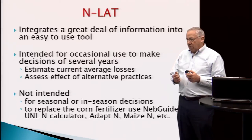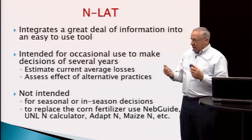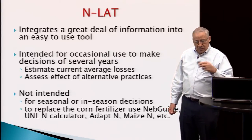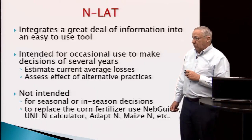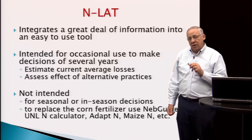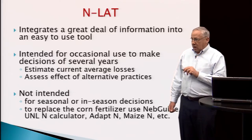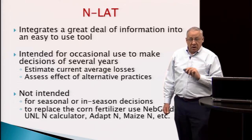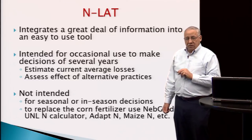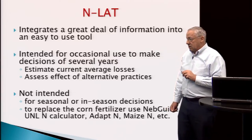NLAT is a decision tool and, as with many decision tools, it's constructed to incorporate much good information in an easy-to-use format. There are a lot of mathematical functions in the tool — these interlink and overlap — and it is quite complex, but it's developed in a way to make it easy to use and apply a great deal of information with very little effort. The tool is intended for occasional use to make decisions over several years — that is, for medium and long-term planning — to get your estimates of current losses for a field. For many fields you'll find that your losses probably are not very great and there isn't good justification to change your management practices, but other fields are much higher risk and will have substantial losses where there could be substantial benefit from other practices.